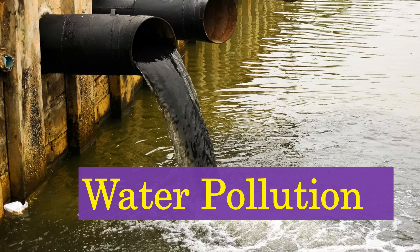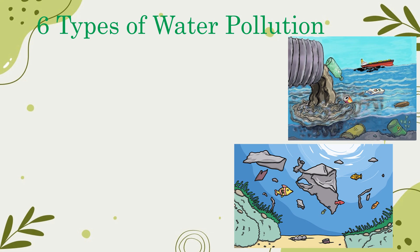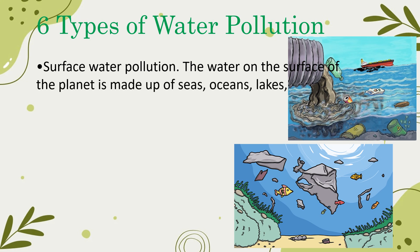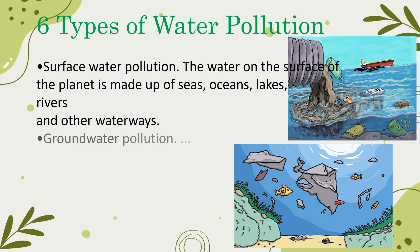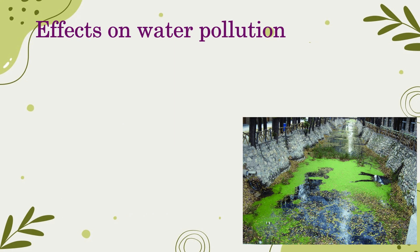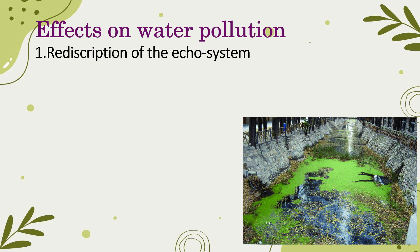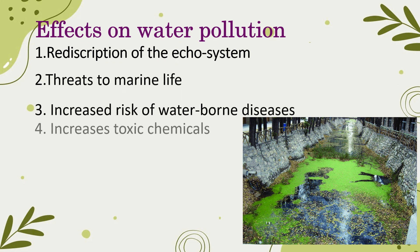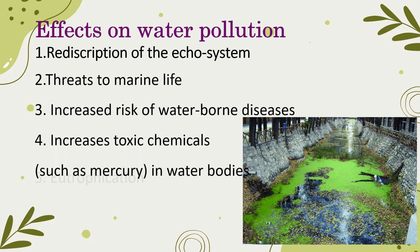The second type of pollution is water pollution. We are discussing six types of water pollution. They are: surface water pollution — the water on the surface of the planet made up of seas, oceans, lakes, rivers and other waterways — groundwater pollution, chemical pollution, microbiological pollution, nutrient pollution, and suspended matter pollution. Effects of water pollution include destruction of the ecosystem, threats to marine life, increased risk of waterborne diseases, increases in toxic chemicals such as mercury in water bodies, and eutrophication.